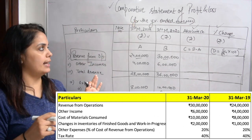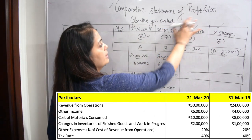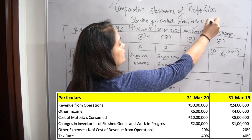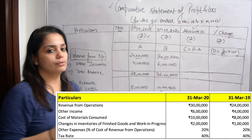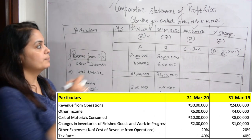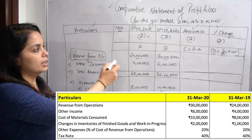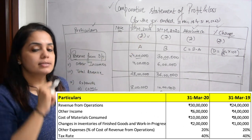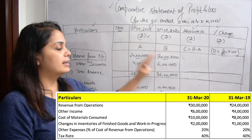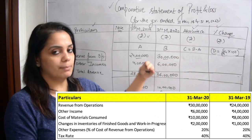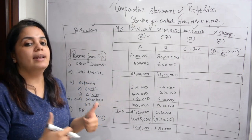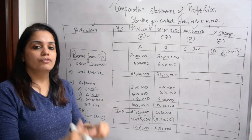First of all I have to write a comparative statement of profit and loss for the year ended — comparing 31st March 2019 and 31st March 2020 — in which I am comparing profits and losses of this year with the previous year. I will write particulars first, then note number. First I will write figures in the previous year, then current year, then give the absolute change, and then we will calculate the percentage change — how much percentage change has come when comparing figures from the previous year to the current year.